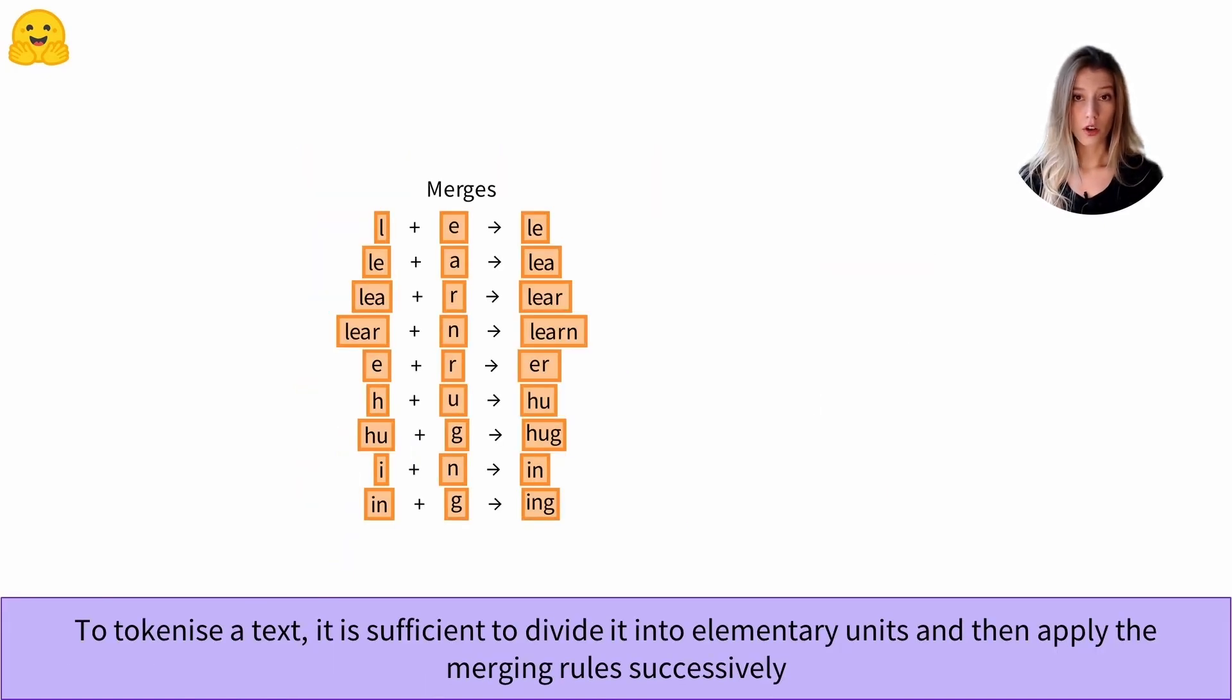Now that we have learned our vocabulary and merging rules, we can tokenize new text. For example, if we want to tokenize the word hugs, first we will divide it into elementary units, so it becomes a sequence of characters, then we'll go through our merge rules until we have one we can apply.